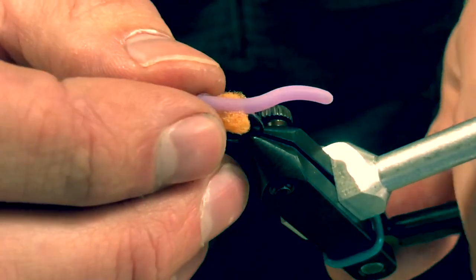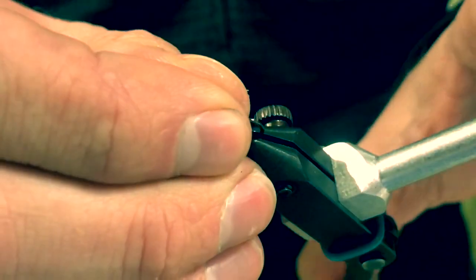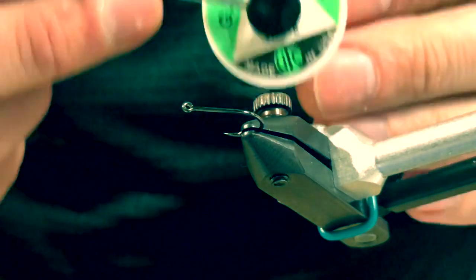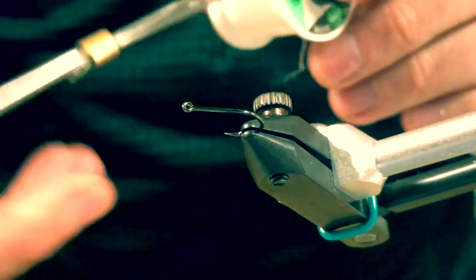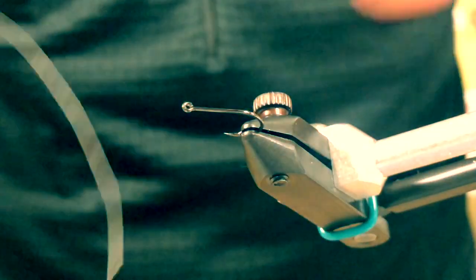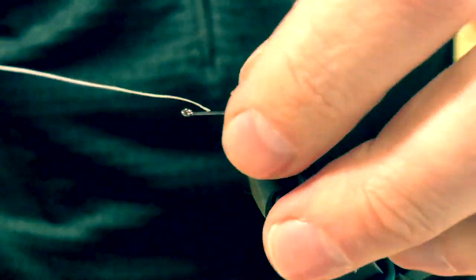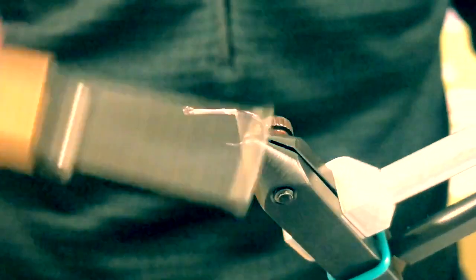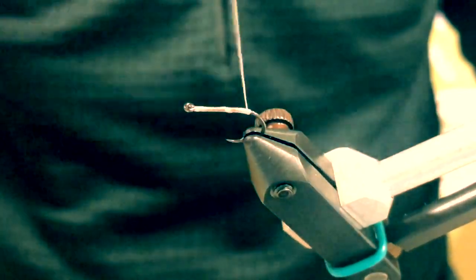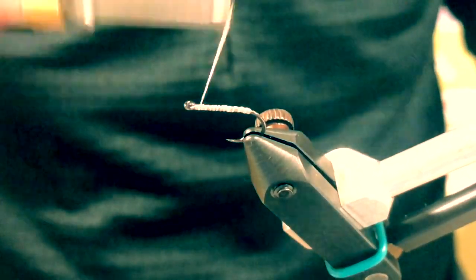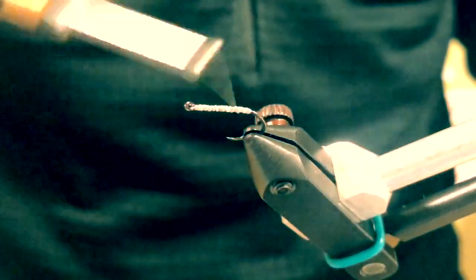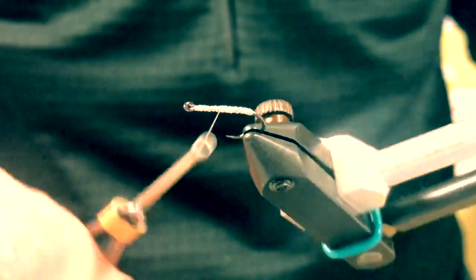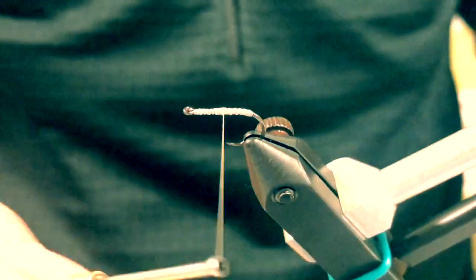The thread I'm using is a 75 denier white gel spun thread—you can use any white thread. The gel spun I just tend to use a lot because you can't really break it. We're gonna start and just thread this up and go all the way down pretty well into the bend. This thread will give that squirmy material something to stick to. Go deep down into the bend, then hang your thread right in front of the hook point.